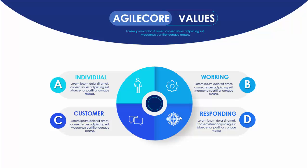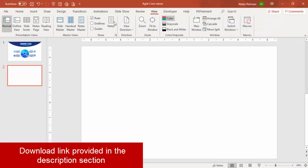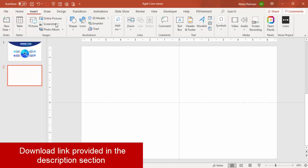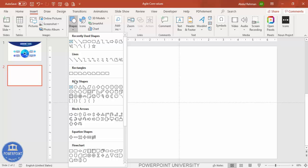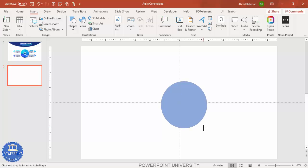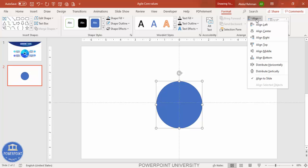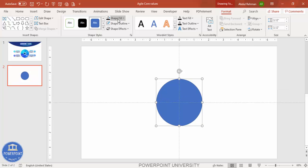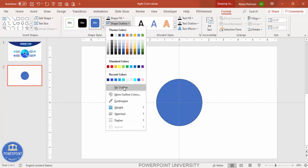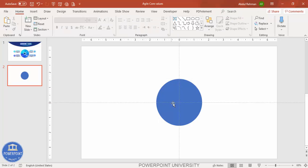To create this agile core values slide in PowerPoint, add a new slide, go to View and enable the guides. Then go to Insert > Shapes, and from the basic shapes select the oval shape. Draw the oval shape by holding the Shift key — maybe around this size. Then go to Align Center, Align Middle, and set the shape outline to no outline.